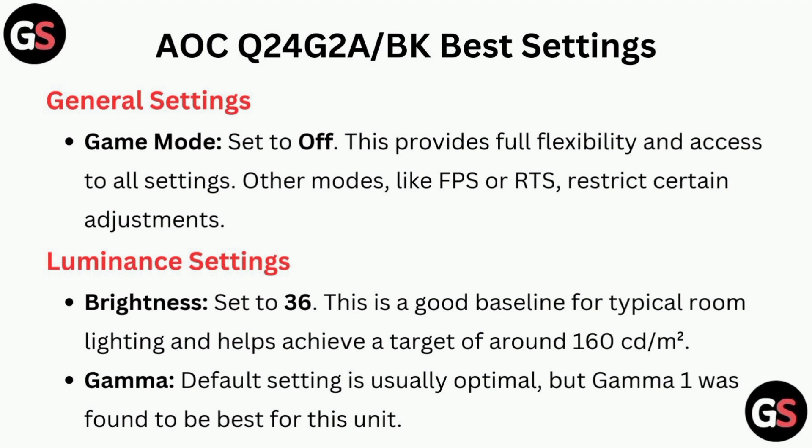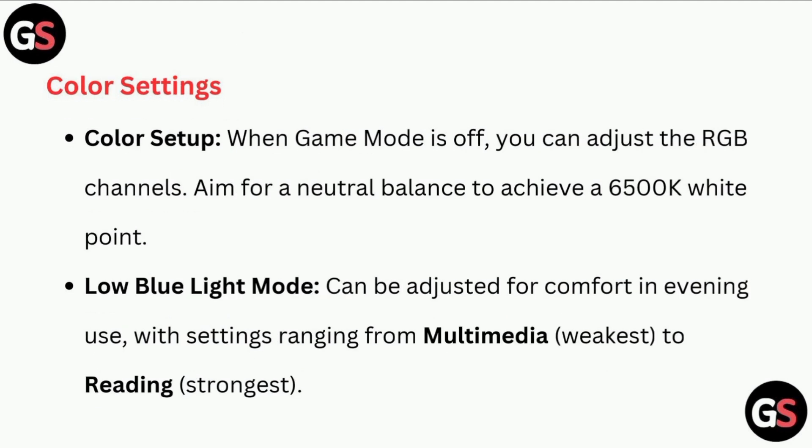Brightness is set to 36, which is a good baseline for typical room lighting and helps achieve a target of around 160 cd/m². Gamma default setting is usually optimal, but gamma 1 was found to be best for this unit.